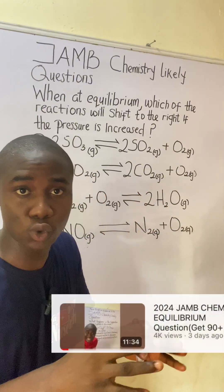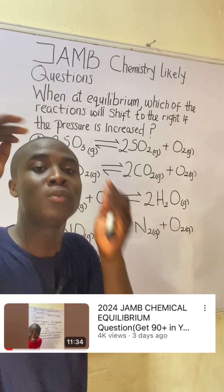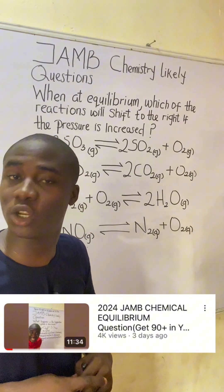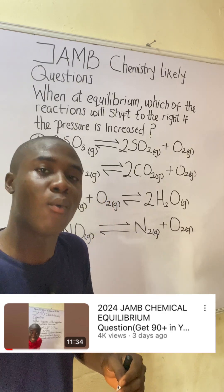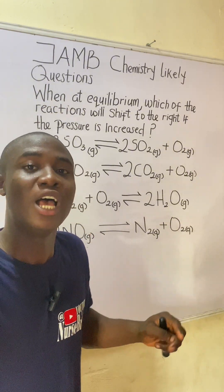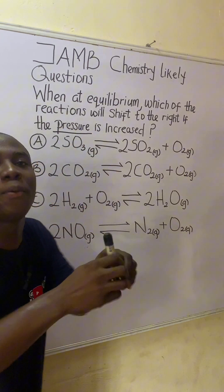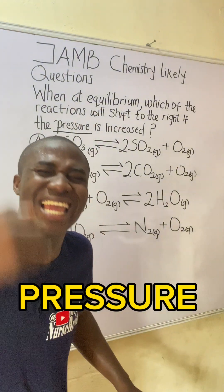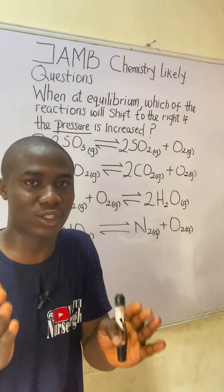In one of my videos here on YouTube and also on TikTok, I've explained how temperature as an external constraint can affect a reaction. Please do go watch that particular video lesson — it is very important for you to have that knowledge so that whenever questions from that aspect come out, you can solve them without stress. From the look of things in this question, you can see the word 'pressure,' so we'll be explaining how pressure can actually affect a system or reaction at equilibrium.